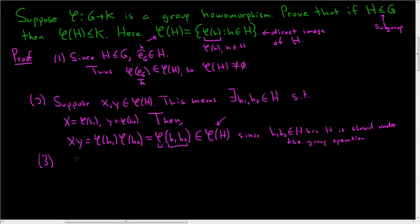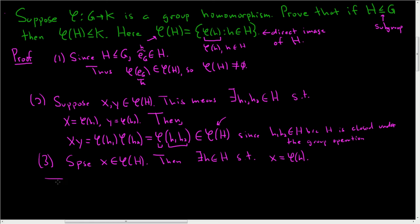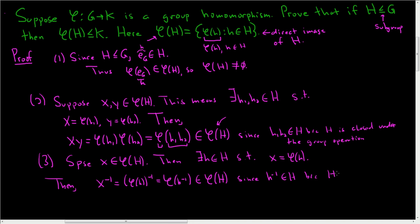Three: we have to show it is closed under inverses. So suppose again that we have some x in phi of H. Then there exists some little h in H such that x equals phi of little h. We have to show that the inverse of x is also in phi of H. So then x inverse equals phi of little h inverse, which is phi of h inverse, and this is certainly an element in phi of H, since the inverse of little h is in H, because H is closed under inverses.